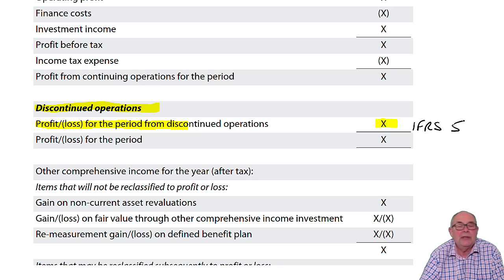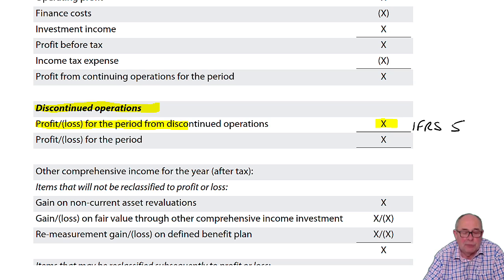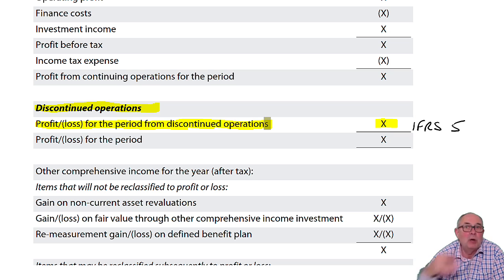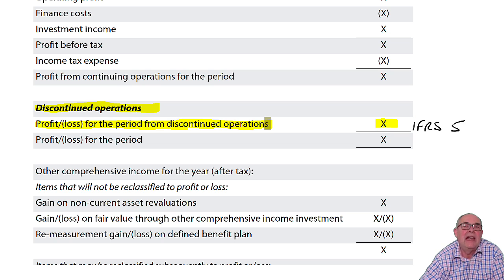If you've closed a division or you're planning to sell it and it's held for sale, its results are shown separately in order to aid analysis of accounts, because people don't want to know about what won't be there next year. So discontinuances are probably the only exciting thing in the main part of the P&L.